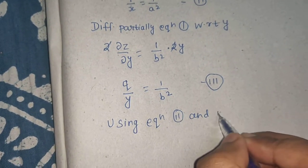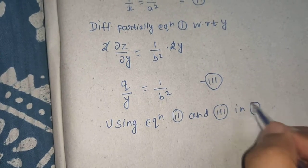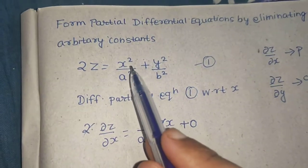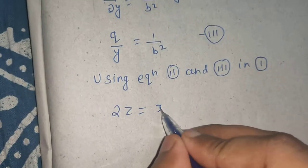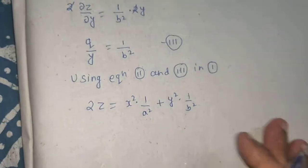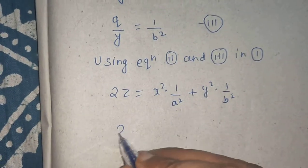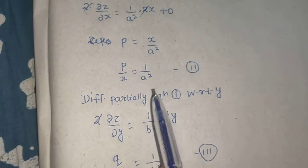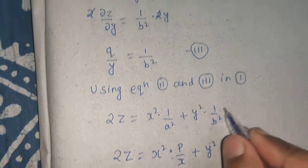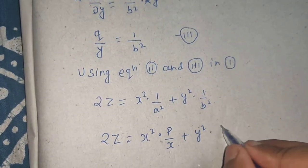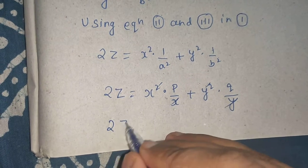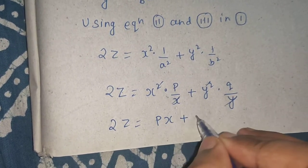Now using equations 2 and 3 in equation 1: 2z equals x-squared by a-squared plus y-squared by b-squared, which I can write as x-squared times (1 upon a-squared) plus y-squared times (1 upon b-squared). Now substituting: 1 upon a-squared is p by x, and 1 upon b-squared is q by y. One x cancels and one y cancels, so 2z equals px plus qy.